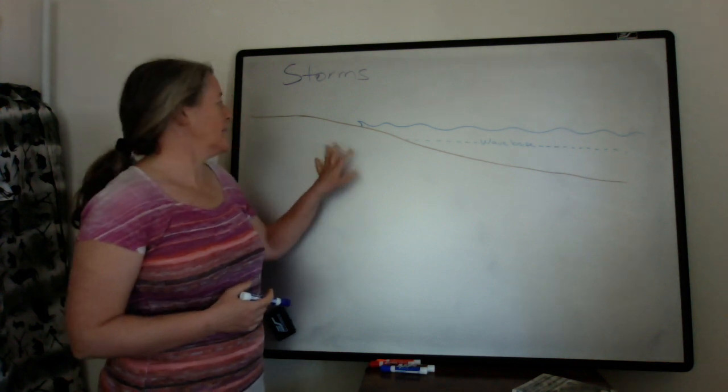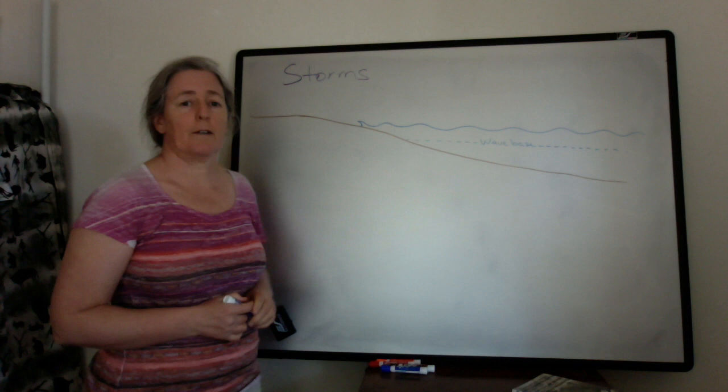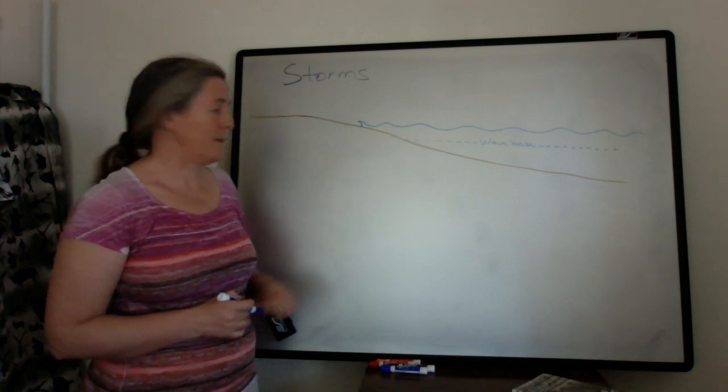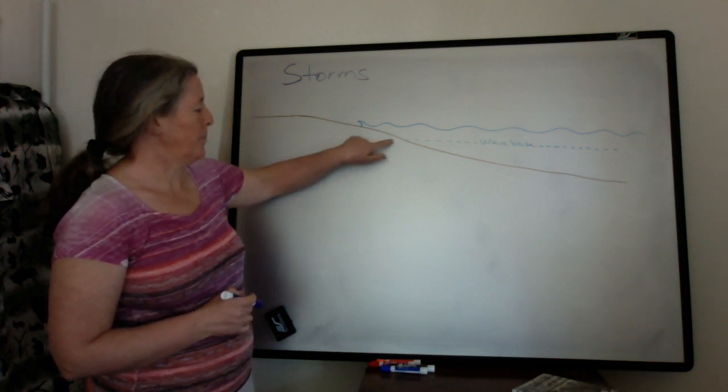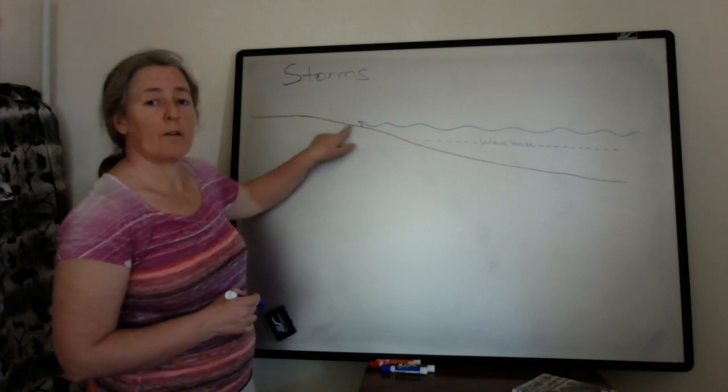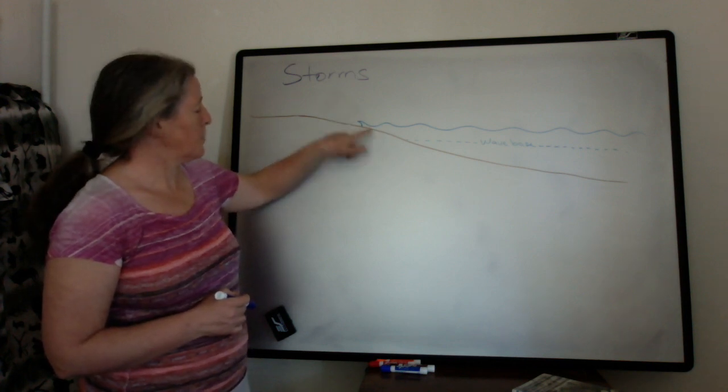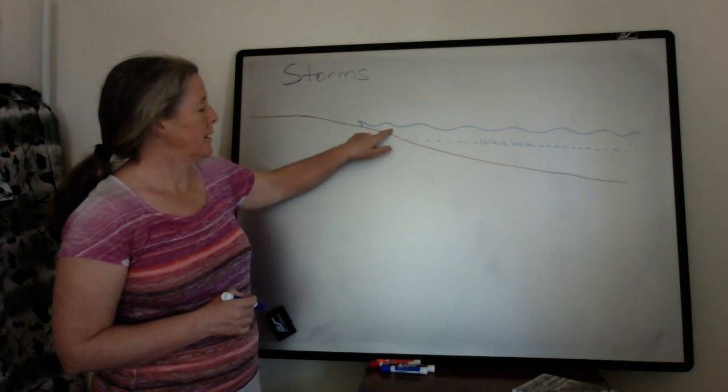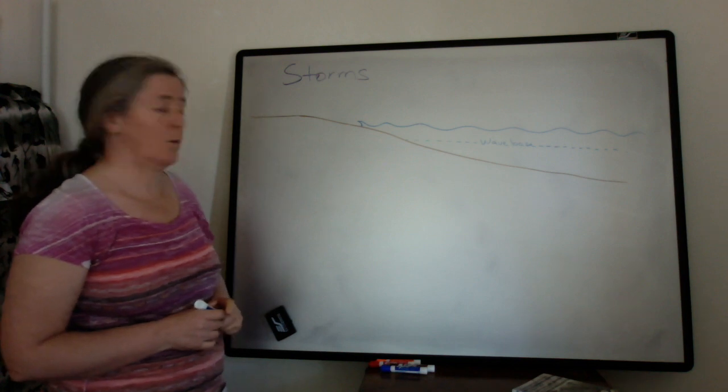Storms are a major process that transport sediment from nearshore to offshore environments. I've drawn a coastline here with the normal wave base, and the waves interact with the bottom above this wave base zone. They transport sediment back and forth onto the beach and off the beach. Under normal circumstances, any sediment that's entrained in the flow and gets out here ends up deposited below wave base.